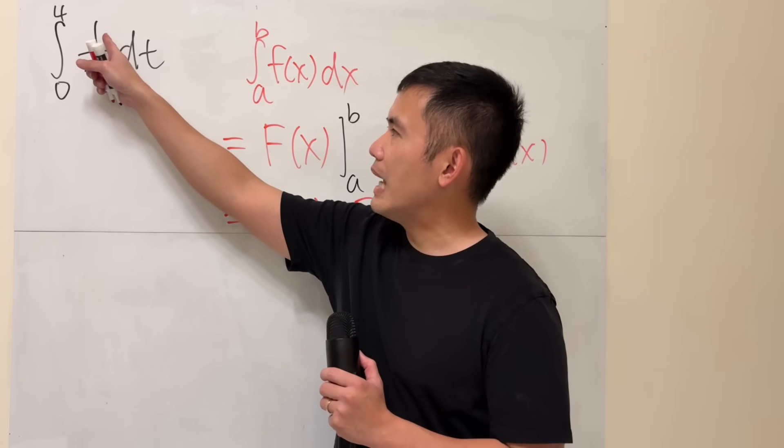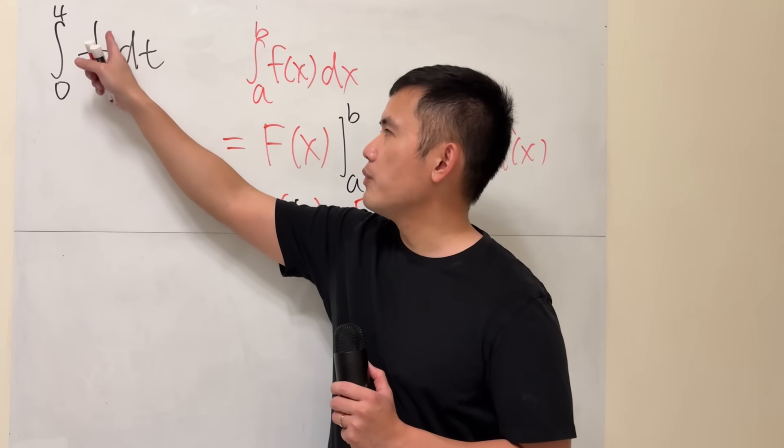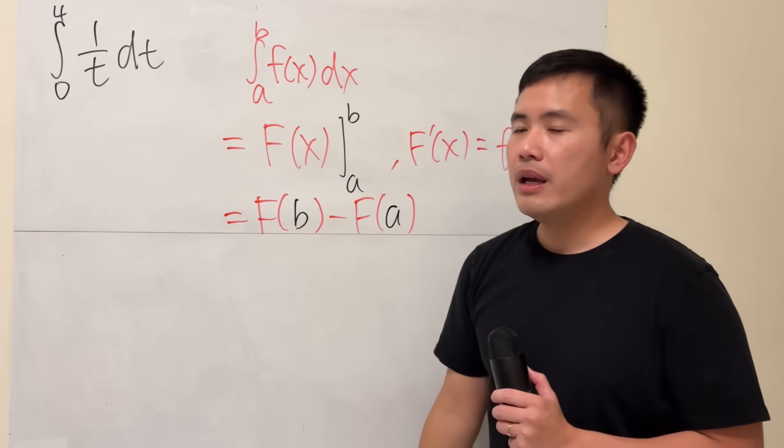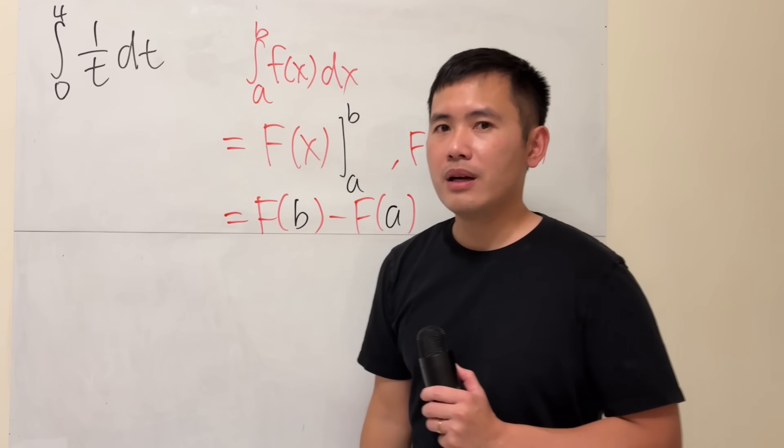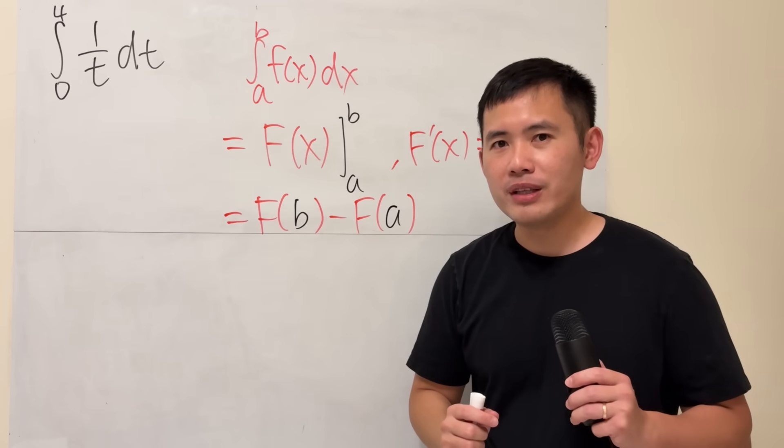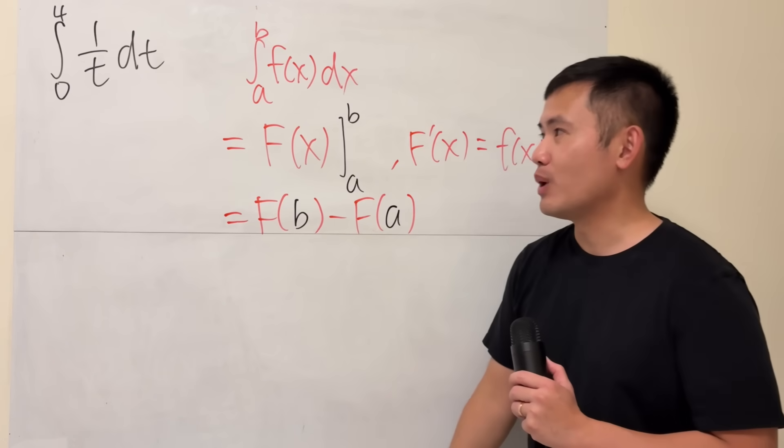We have the integral, and we will have to first find an antiderivative for 1 over t. And notice, in this case here, we are going from 0 to 4. I know there's a bad number already, but let's just proceed and see what happens.